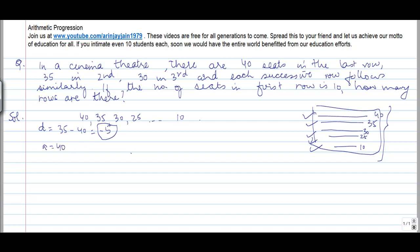So you are supposed to find out how many rows are there. We know that a_n is equal to a plus n minus 1 into d. So a_n, what is the value of a_n? 10, 40, plus n minus 1 into minus 5.